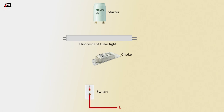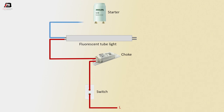Phase connection from switch to choke. Phase connection outgoing from choke to fluorescent tube light. Another connection from fluorescent tube light to starter. Neutral connection, connected to fluorescent tube light neutral point.